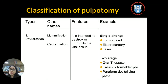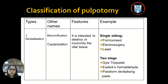Coming to the classification of pulpotomy: first, it can be classified as devitalization; second is preservation; and third is regenerative. Devitalization is also called mummification or cauterization. It is intended to destroy or mummify the pulp so that the physiological processes of the pulp in that area are arrested. Devitalization pulpotomy can be single-sitting or two-sitting. Single-sitting involves the use of formocresol, electrosurgery, and laser, whereas two-stage pulpotomy includes glutaraldehyde paste, elastic formaldehyde, and paraform devitalizing paste.